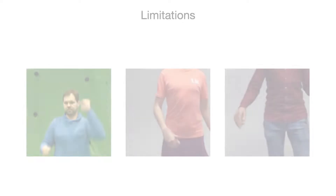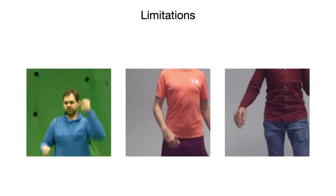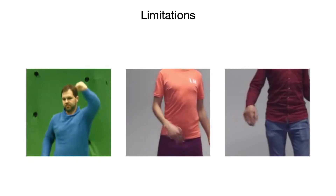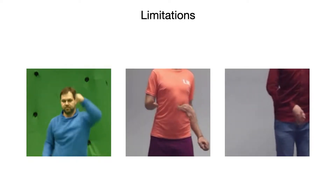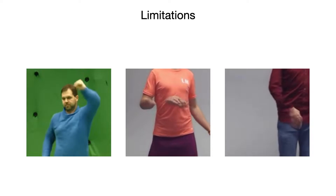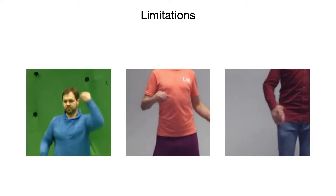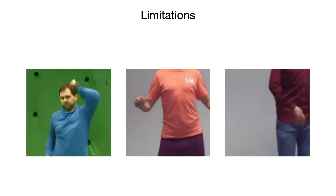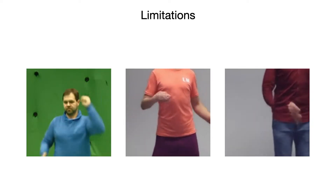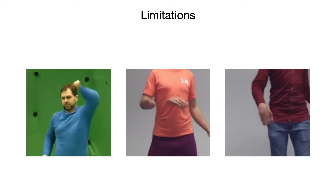Our technique can produce artifacts due to the depth ambiguity of 2D poses and errors in body part segmentation. These effects propagate through our framework and result in incorrect occlusions or disconnected limbs, as shown in these examples.